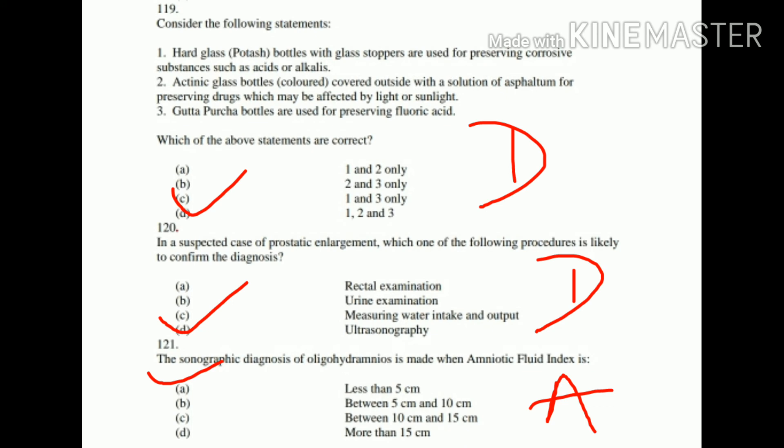Question number 119: Consider the following statements: 1. Hard glass potash bottles with glass stoppers are used for preserving corrosive substances such as acids or alkalis. 2. Actinic glass bottles colored or covered outside with a solution are used for preserving drugs which may be affected by light or sunlight. 3. Gutta-percha bottles are used for preserving fluoric acid. All three statements are correct — Option D is right.